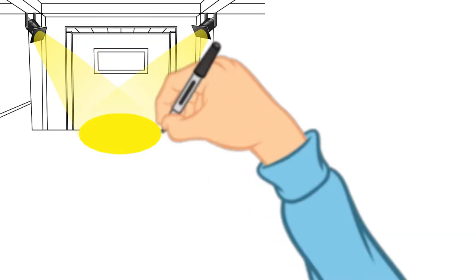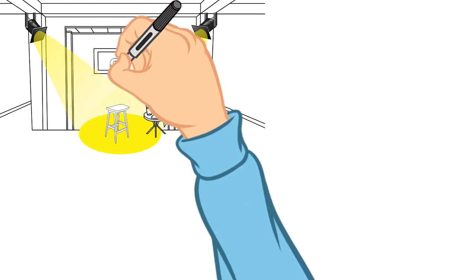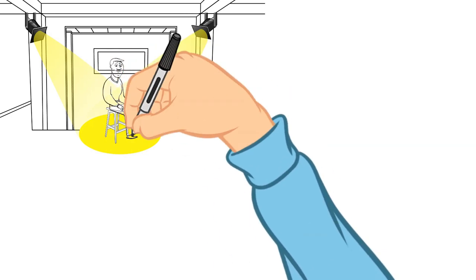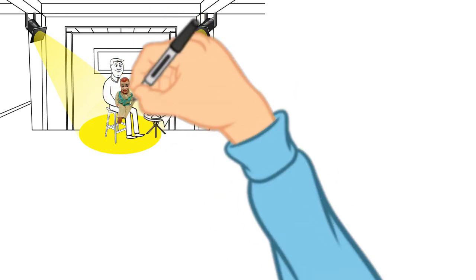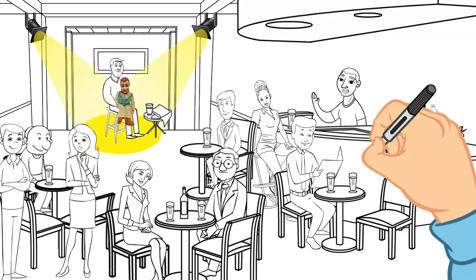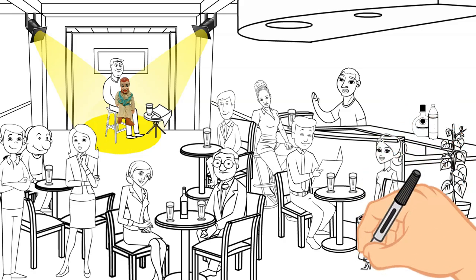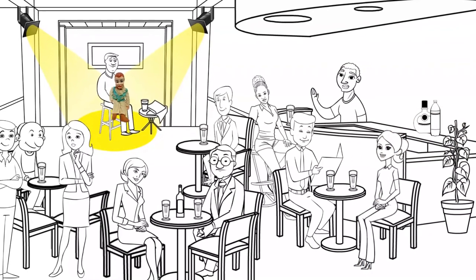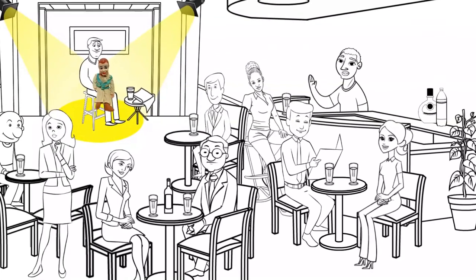A young ventriloquist is touring the clubs, and one night, he's doing a show in a small club in a small town in Arkansas. With his dummy on his knee, he's going through his usual dumb blonde jokes, when a blonde woman in the fourth row stands on her chair and starts shouting.